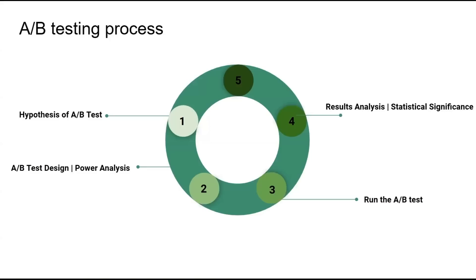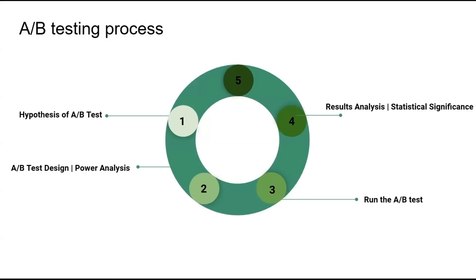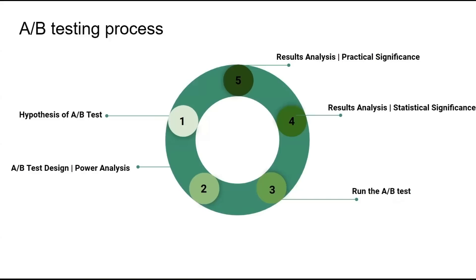The fourth step is choosing the right statistical test — whether z-test, t-test, chi-square test, etc. — to test the hypothesis using collected data and determine whether there is a statistically significant difference between the control and experimental groups. The fifth and final step is to analyze the results and find out whether, besides statistical significance, there is also practical significance. In this step, we use the power analysis assumptions and the fourth step's results to determine practical significance. This summarizes the A-B testing process at a higher level — in the next lectures, we'll go through each step.